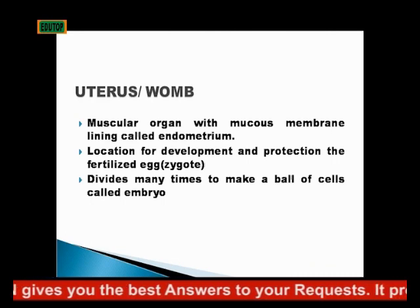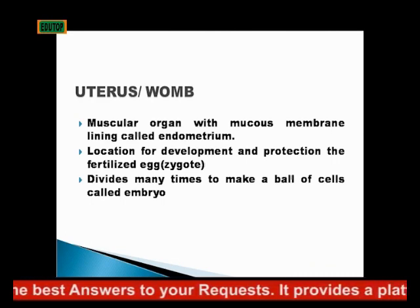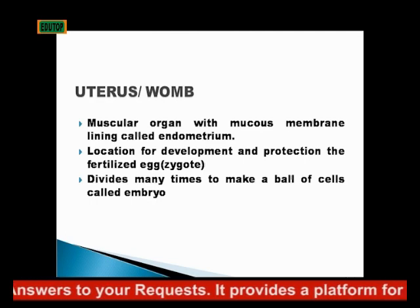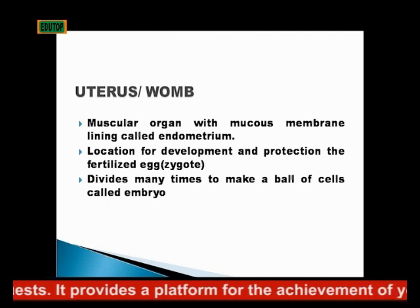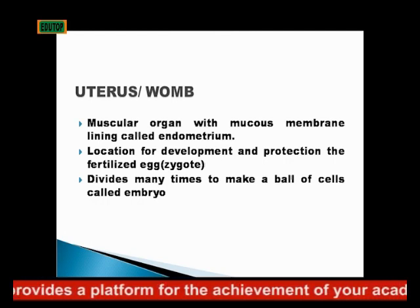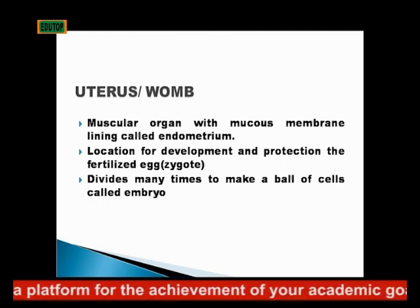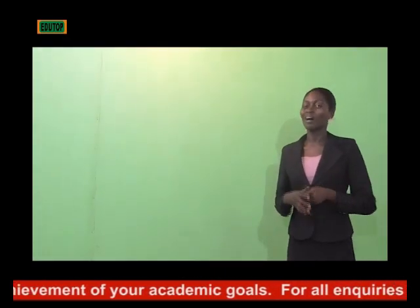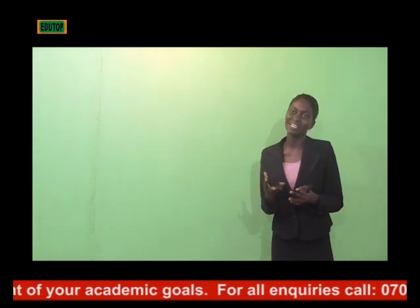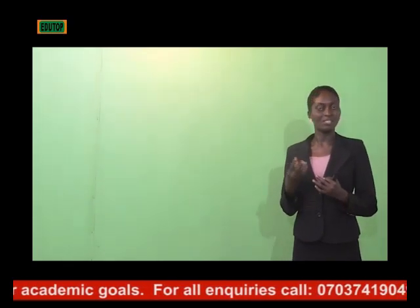The next structure is the uterus or the womb. The uterus is a muscular organ with a mucous membrane lining called the endometrium. It is the location for the development and protection of the fertilized egg. After fertilization occurs in the oviduct, the fertilized egg or zygote moves into the womb or uterus for development, and that is where it stays.